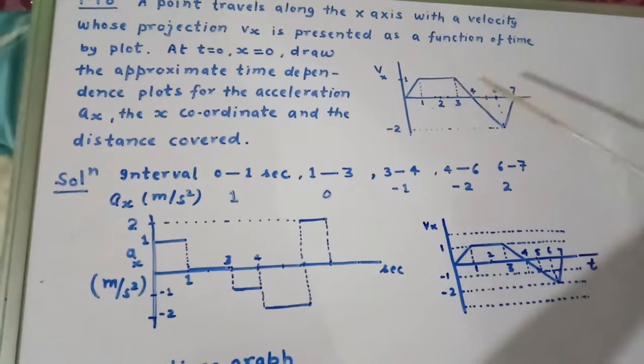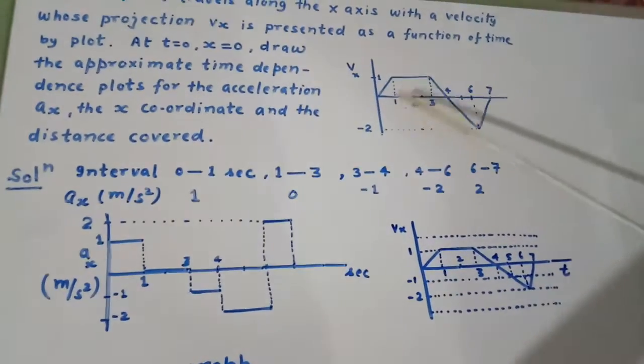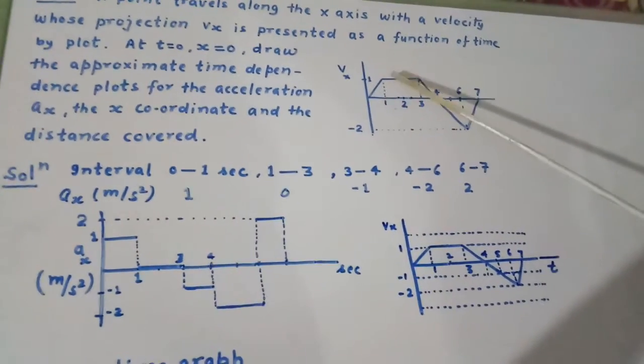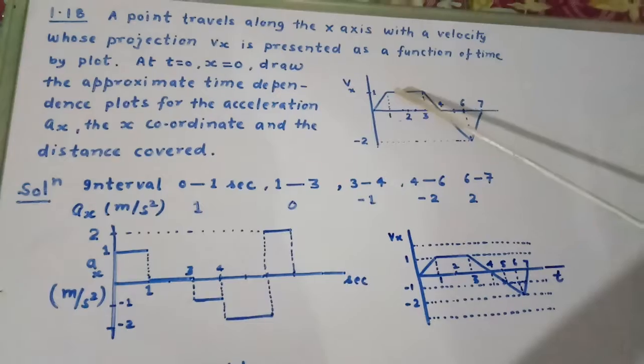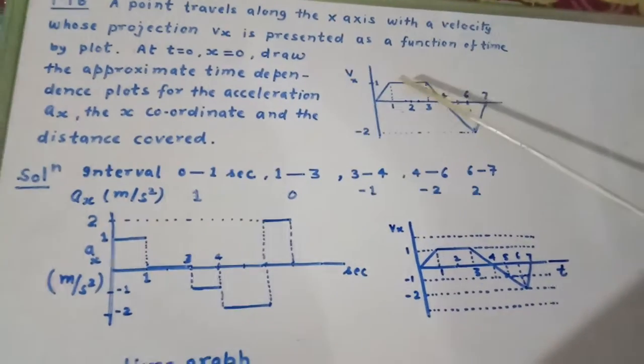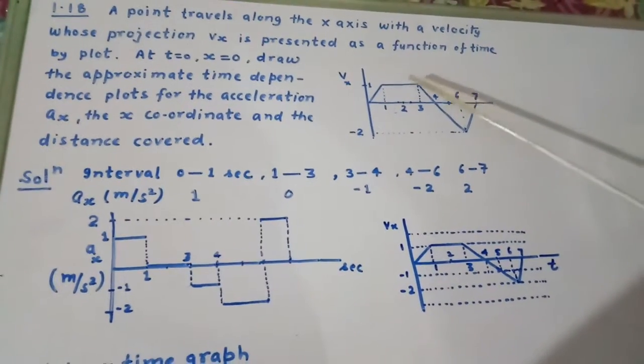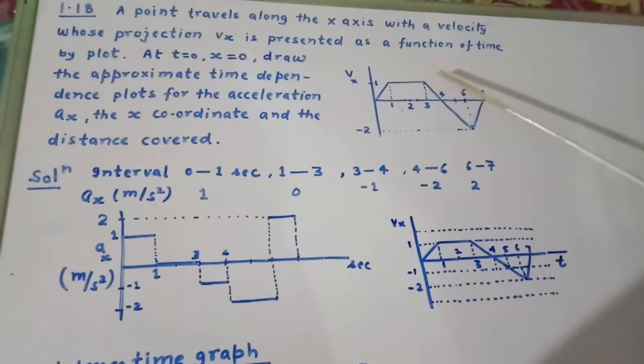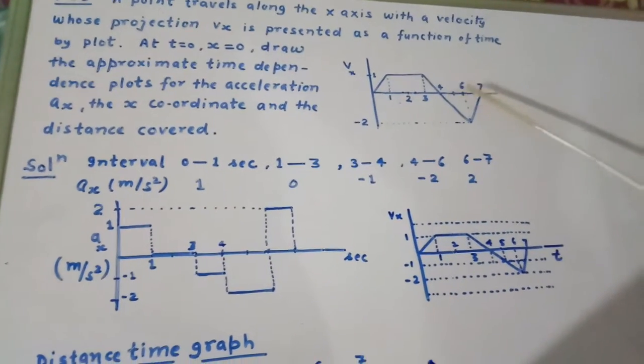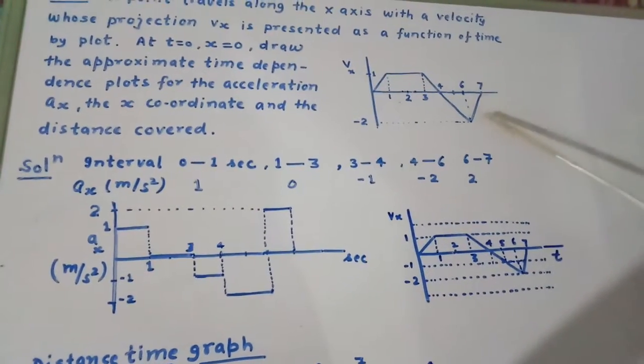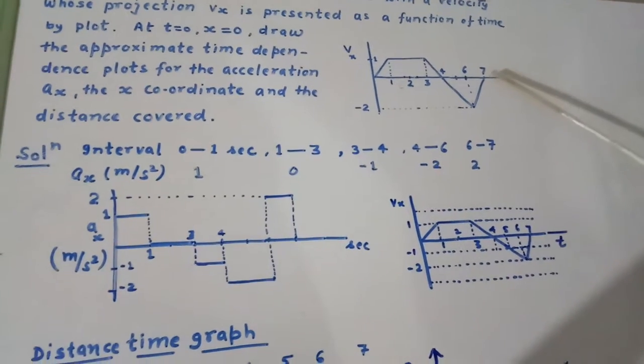In this diagram, this is velocity axis, this is time axis. From 0 to 1 second, velocity increases and it becomes 1 meter per second square. From there till 3 seconds, velocity remains constant. After that, velocity starts decreasing and then at 6 seconds, velocity starts increasing till 7 seconds.